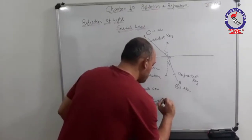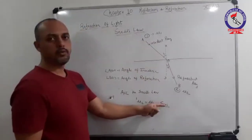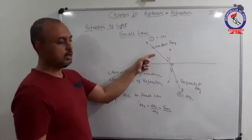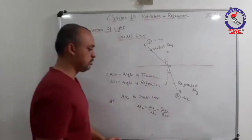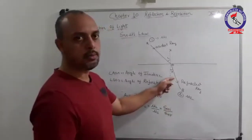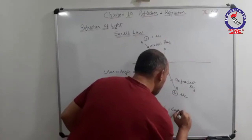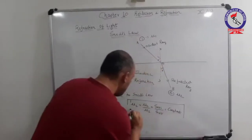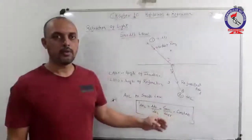This ratio is equal to the sine of the angle of incidence divided by the sine of the angle of refraction. The angle of incidence is the angle made by the ray in the rarer medium, and the angle of refraction is the angle made by the ray in the denser medium. This ratio is always constant for a given pair of media.